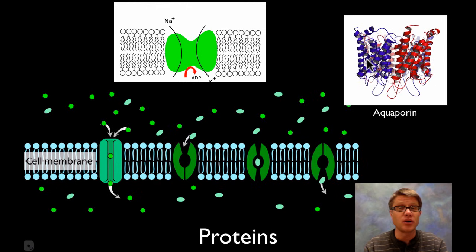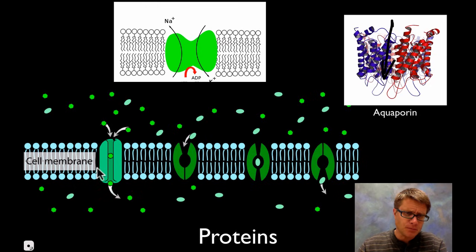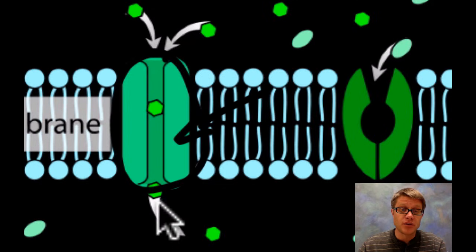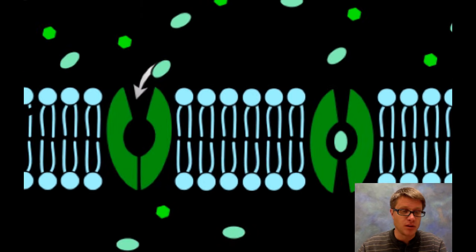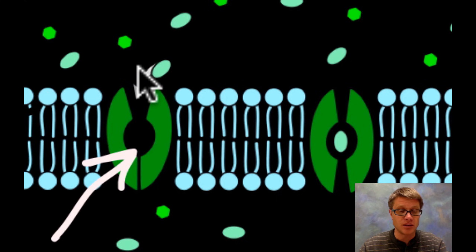How does water get into a cell? We used to think that it would just flow in using osmosis, but we now know that you have these proteins called aquaporins. Basically what they do is allow water to move through — really, really quickly. Sometimes proteins will have an area on the inside where it's protected, and that allows material with a charge to move through — like glucose moving through here. And then some will move through using active transport, where we put energy in to move them, or facilitated diffusion.